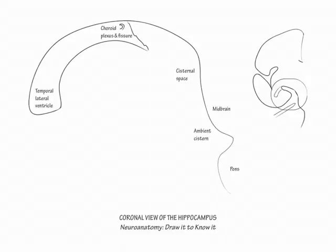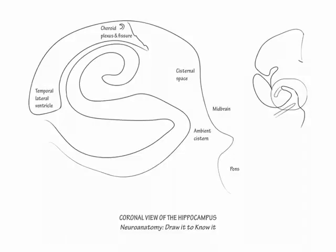When the medial temporal lobe herniates into the basal cisterns, it does so first into the ambient cistern. Now we will draw the hippocampal formation. To do so, draw a double-sided S-shape structure in two different steps. Then mentally divide the S into its superior turn, horizontal stretch, and inferior turn.